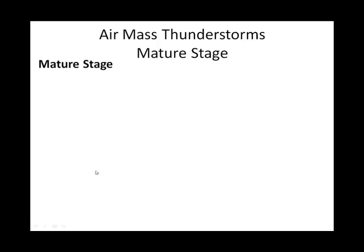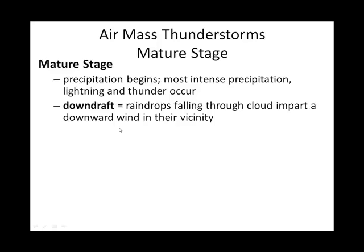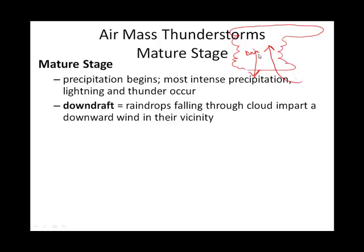The next stage is the mature stage. The mature stage has both an updraft and a downdraft. There's sometimes an anvil associated with the thunderstorm cell. When the thunderstorm cell is in its mature state, it now has a downdraft, and here is where your precipitation is happening. It's during the mature stage that we're going to get our severe weather — we're going to get lightning. Thunder is the audible part of lightning. We might get tornadoes at the mature stage, and we're going to get severe wind and hail.